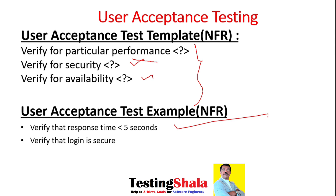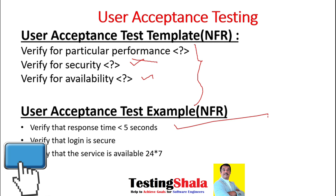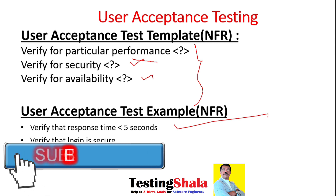The third NFR is availability of the online banking application — verifying 24/7 availability is another test case we want to execute as part of NFR testing.